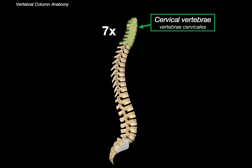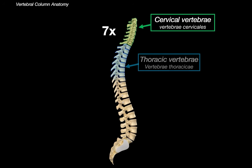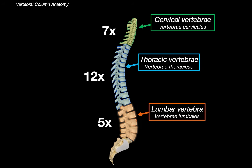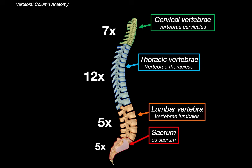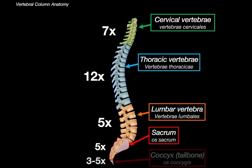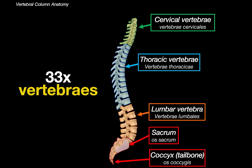We have 7 cervical vertebrae, 12 thoracic vertebrae, 5 lumbar vertebrae, 5 fused sacral vertebrae, and 3 to 5 coccygeal vertebrae, averaging to about 4 coccygeal vertebrae in humans. This means that in humans, our spine is composed of 33 vertebrae.